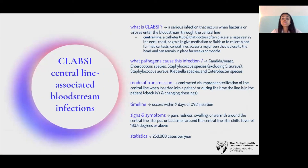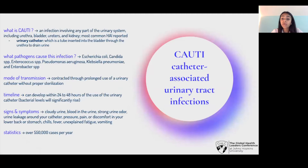First, central line-associated bloodstream infections, also known as CLABSI — a serious infection that occurs when bacteria or viruses enter the bloodstream through the central line. Next is CAUTI, or catheter-associated urinary tract infection, which is an infection involving any part of the urinary system including the urethra, bladder, ureters, and kidney, and it is the most common HAI reported.